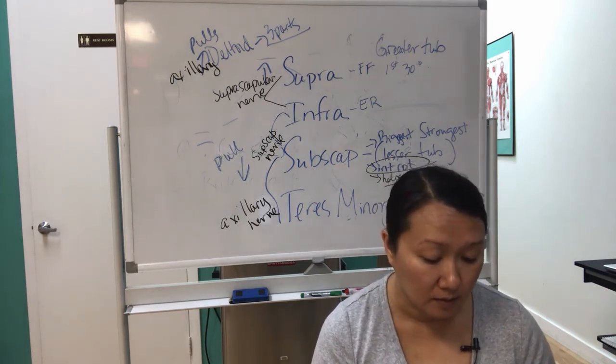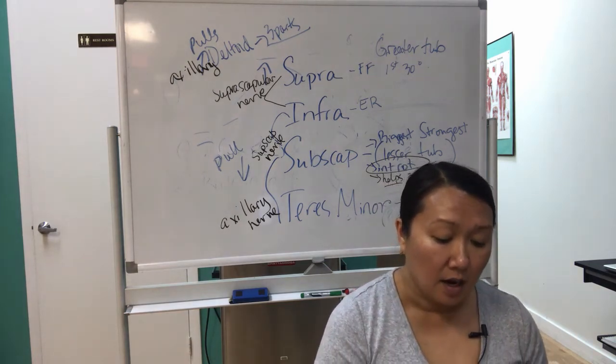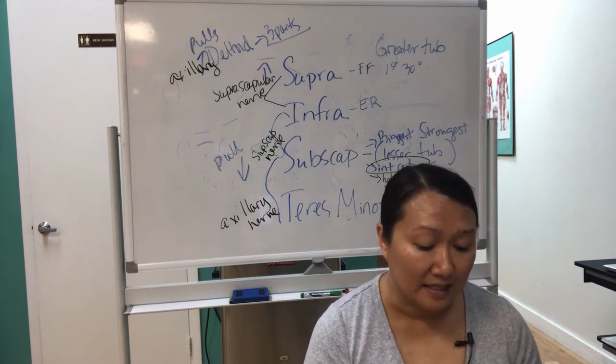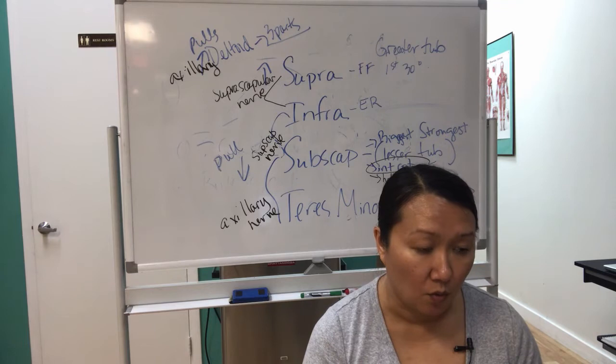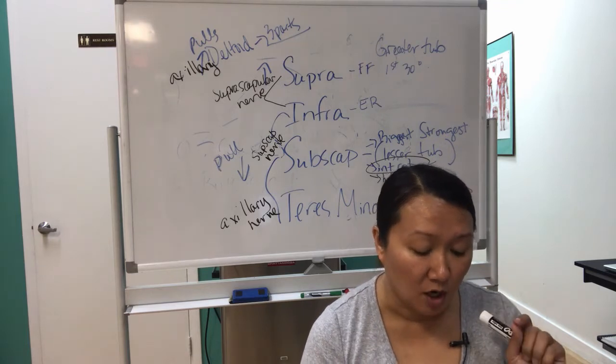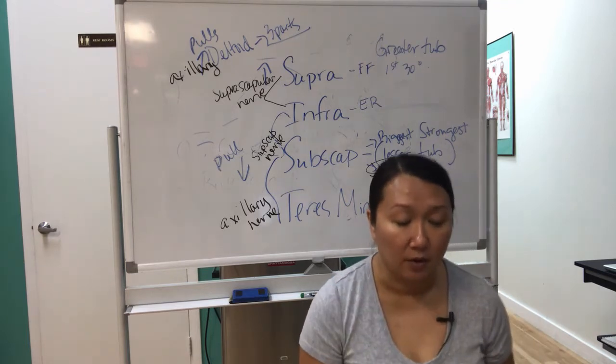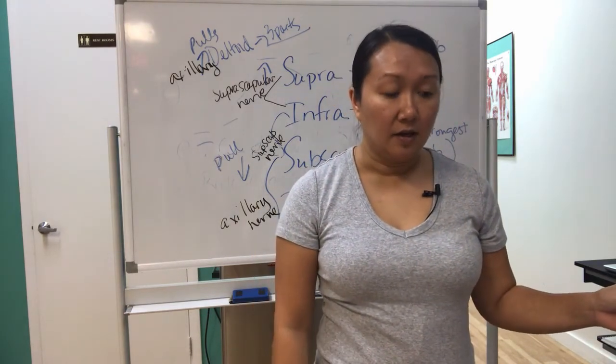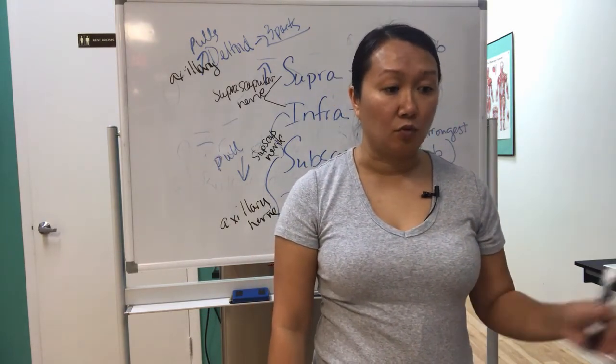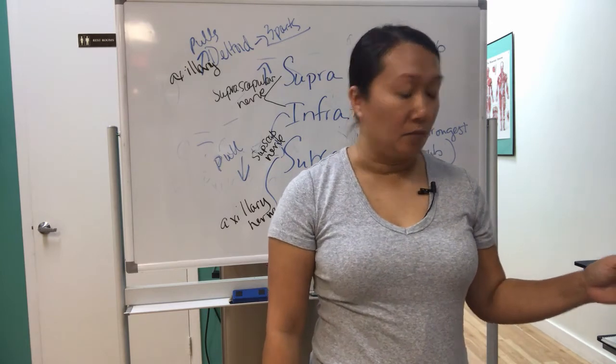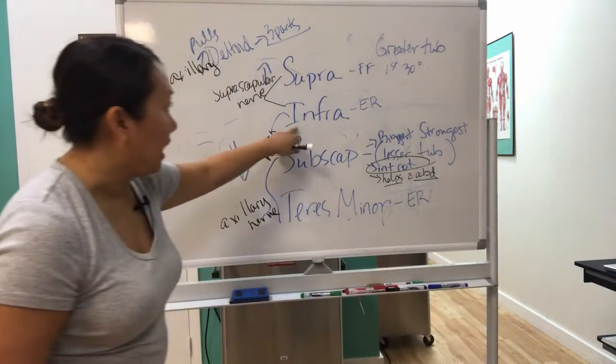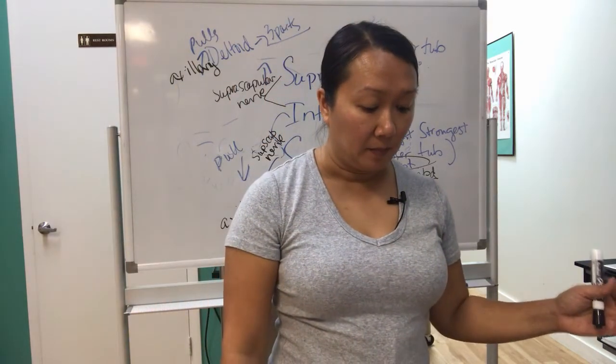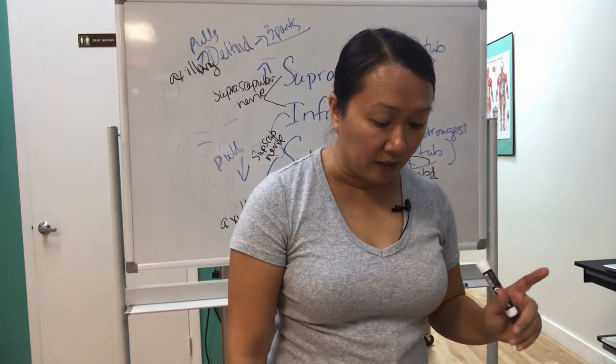Then there's the belly press test, and then you are going to look for the lag signs. So in this particular chapter, when they talk about the lag sign, they're talking about you're going to place someone in external rotation, and if they can't hold that external rotation, that it's most likely an infraspinatus tendon tear if there's a certain amount of lag.